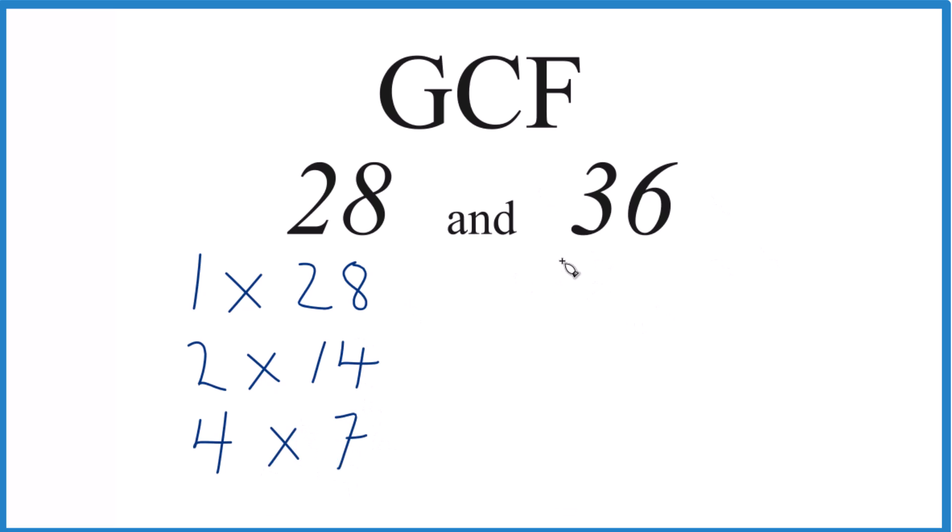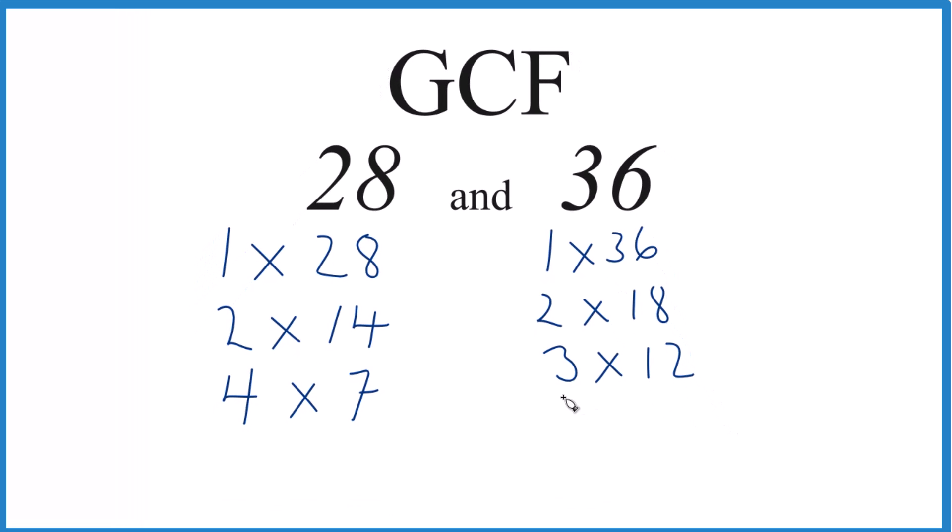For 36, 1 times 36, 2 times 18, 3 times 12, there are a lot of them, 4 times 9, and then 6 times 6. All of these are the factors for 36.